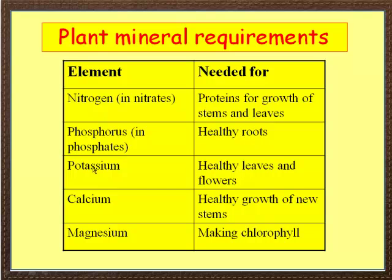Potassium is needed for healthy leaves and flowers. Calcium is needed for the healthy growth of new stems, and magnesium is involved in making chlorophyll — it forms part of the chlorophyll molecule.